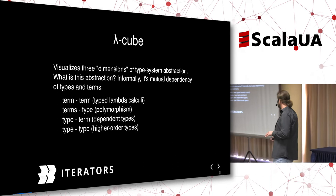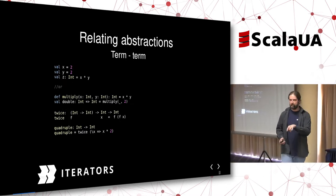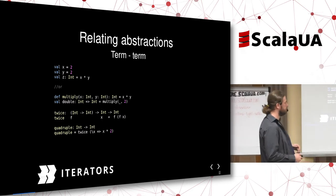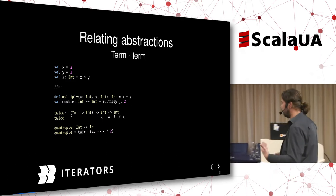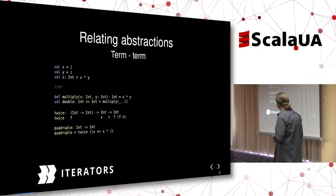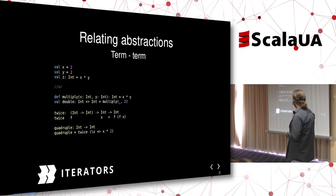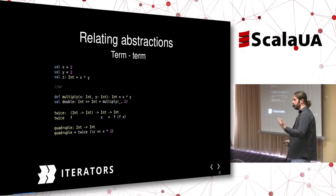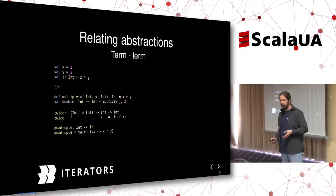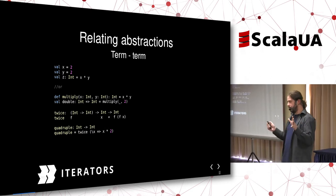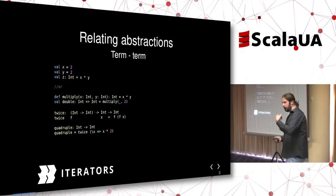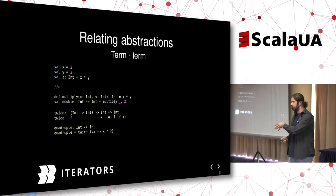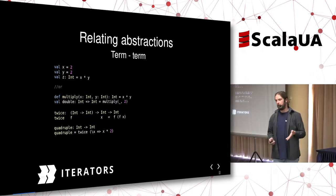The very basic dependency you can allow in your type system is a term depending on another term. With only this dependency, you can have functions, possibly higher-order functions, variables, constants. Computationally it's lambda calculus — you can compute anything computable — but type-wise you don't have much. You can only form a function type, essentially. So even though you can compute anything, you have no real types. If you allow a term to depend on a type, you get parametric polymorphism.